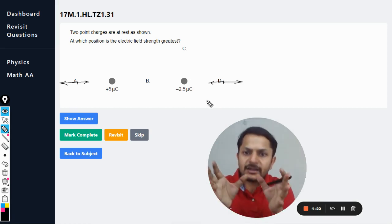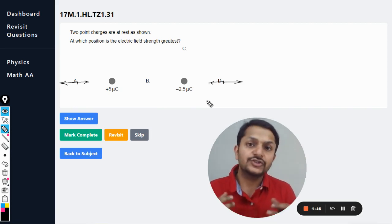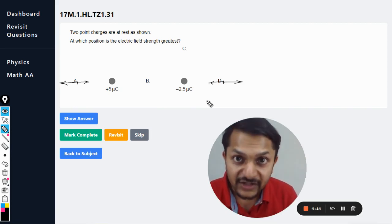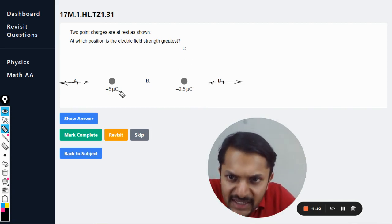At D also that would be opposite to each other. The negative would be attracting and the positive will be repelling. At both of these positions, the electric fields are acting inimical to each other, so they would be canceling each other's effect. So it is definitely not the maximum.